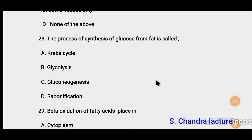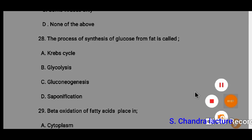Good morning friends, welcome to my channel. Today we will discuss MSc entrance paper. You may be in any subject like microbiology, biotechnology, life science, or zoology, but there is a common paper. This paper is generally divided in two parts: Part A contains 25 questions and Part B contains 75 questions. Part A is related to general aptitude, research methodology, and English, and Part B is related to your subject, especially biology. So let's discuss Part B.